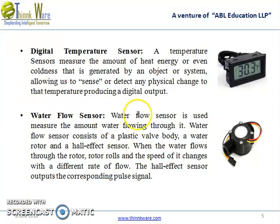Second, we have the water flow sensor. The water flow sensor is used to measure the amount of water flowing. It consists of a plastic valve body, a water rotor, and a Hall effect sensor. When water flows through the rotor, the rotor rolls and its speed changes with a different rate of flow. The Hall effect sensor outputs the corresponding pulse signal.